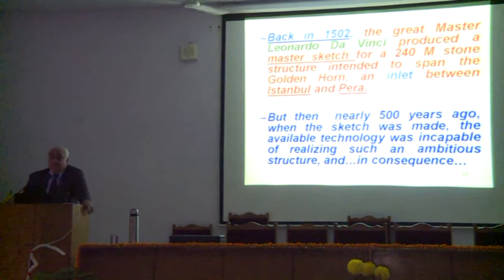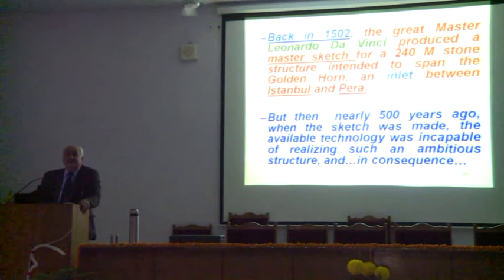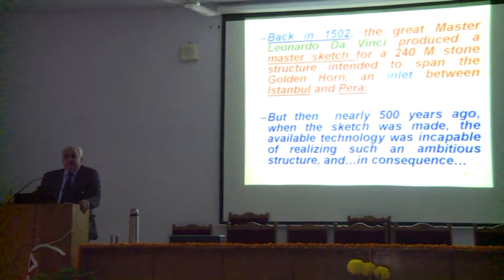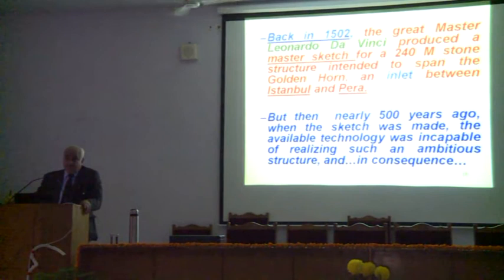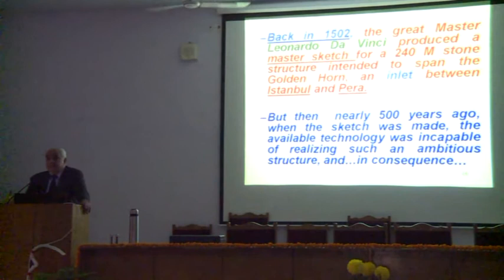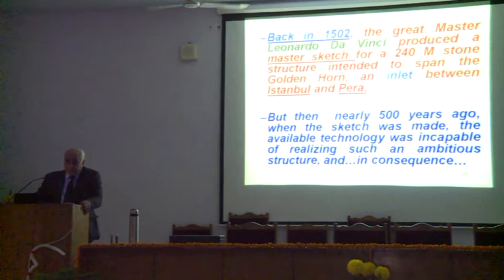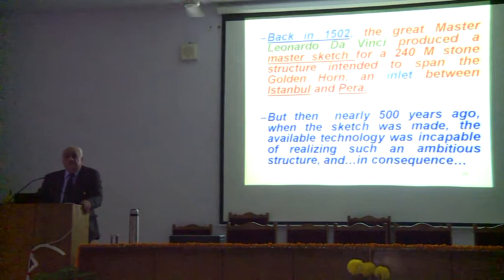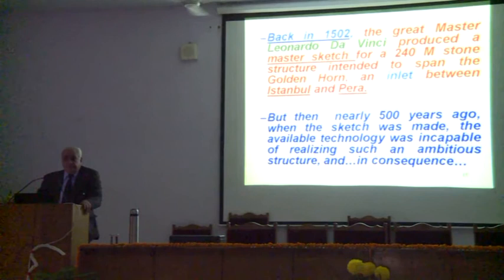Back in 1502, the great Sultan Bezazit of Turkey was a visionary who wanted to cross the 240-meter gap between Istanbul and Pera across the waters with a single-span structure. He could think of nobody better than Leonardo da Vinci, the great master. Da Vinci came, saw, investigated, drew his sketches, and the project was agreed upon. But the visionary Sultan gave up the idea because he didn't find the technology of the day capable of constructing something of 240 meters single span with the construction methods and materials available then. The whole project was given up and the sketches got lost.